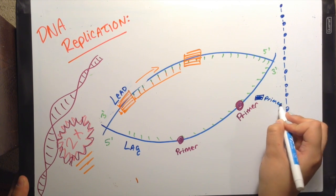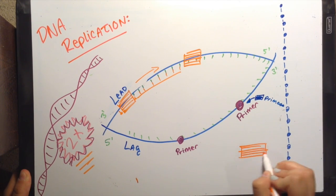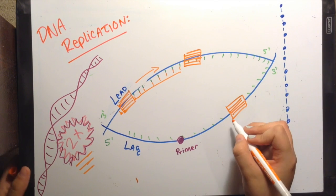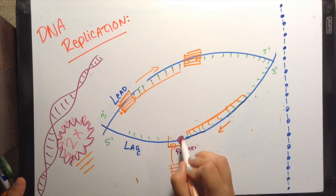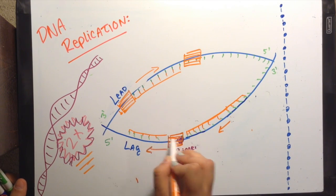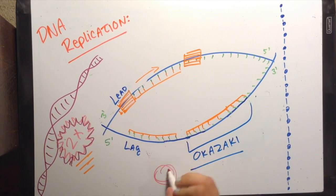Primers, which are short RNA sequences, are placed on the parent strand by primase. Until a primer is present, the DNA polymerase cannot add nucleotides to the lagging strand. The segments made are called Okazaki fragments.